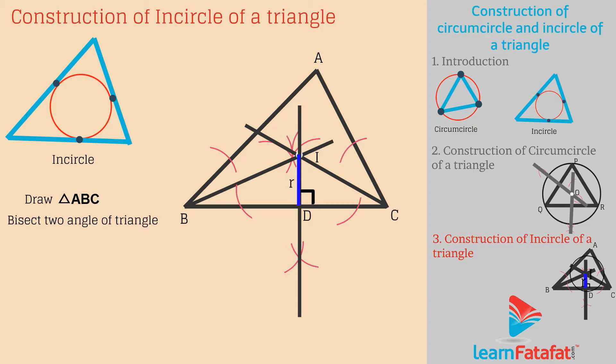ID is the radius of the incircle. Now, with radius ID, draw a circle touching the sides of triangle ABC. This is the required incircle of triangle ABC, in which point I is called the incenter of the triangle.